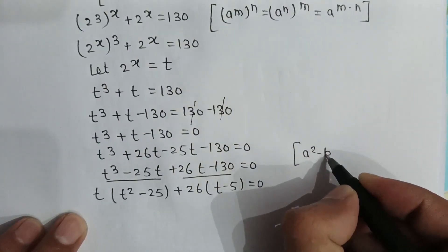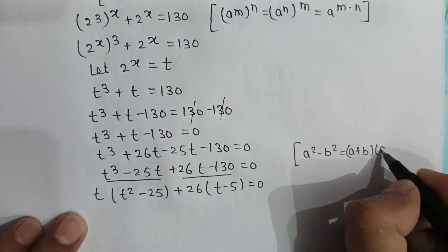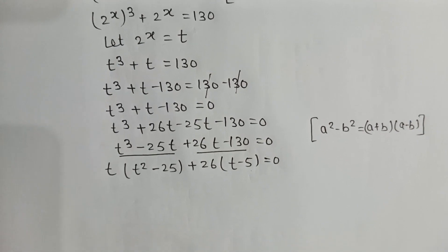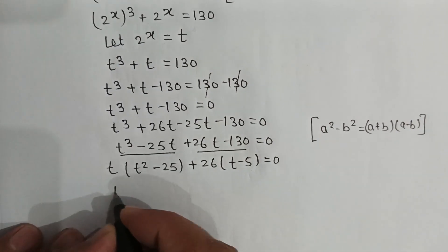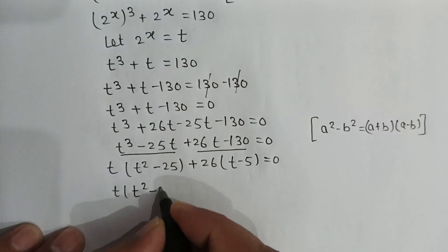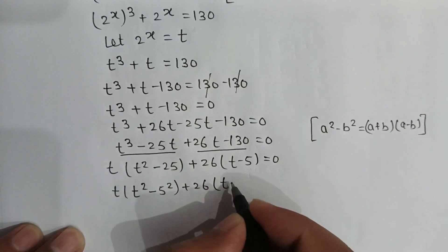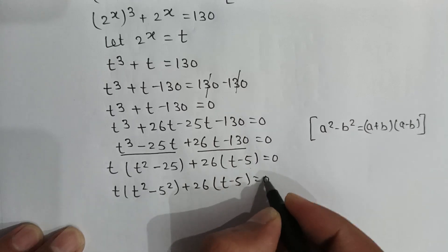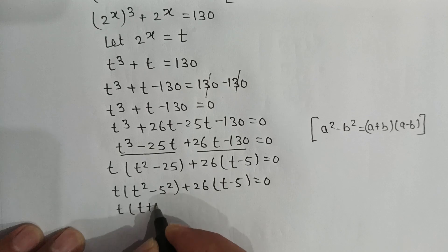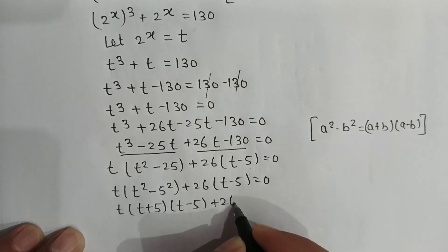As we know, a squared minus b squared can be written as (a plus b)(a minus b). So t squared minus 25 becomes t squared minus 5 squared, giving us t times (t plus 5)(t minus 5) plus 26(t minus 5) is equal to 0.